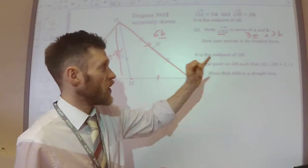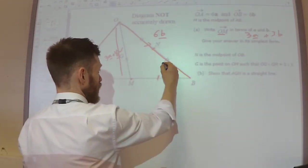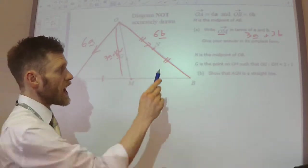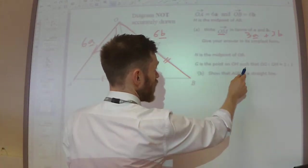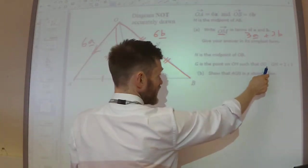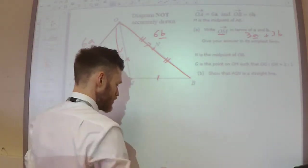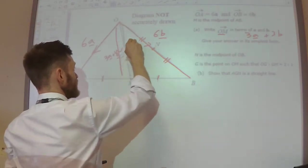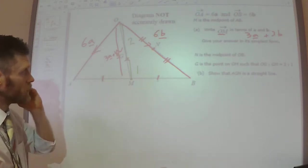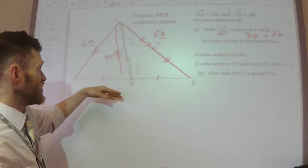We're told N is the midpoint of O to B. So this is the midpoint of O to B. That's why these lines are there, because that's equal to that. And we're told that G is the point on O to M. Here's G. Such that the ratio of O to G to G to M is 2 to 1. So this is 2 parts, that is 1 part. So straight away I could divide up this 3a plus 3b in the ratio of 2 to 1.